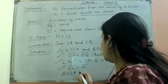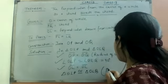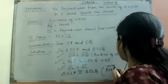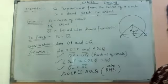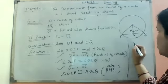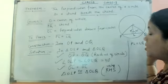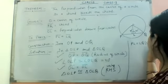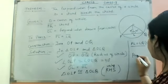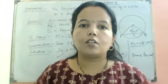We are writing that triangle OLP is congruent to triangle OLQ by RHS. With CPCT — corresponding parts of congruent triangles — we can prove PL equal to LQ. So PL equal to LQ is proved. I hope you understand the theorem. Thank you very much, bye.